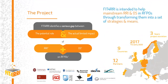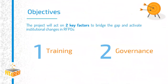Fit4RI is a project with a consortium of 12 partners from nine countries with one more year to go, having started in 2017. The project moves from the assumption that there is a serious gap between the potential role that RRI and open science could play in the research environment and what they actually play. Fit4RI is intended to help mainstream RRI and open science by transforming them into strategies and means, working towards two key objectives — bridging this gap and activating institutional change — through training and governance settings.